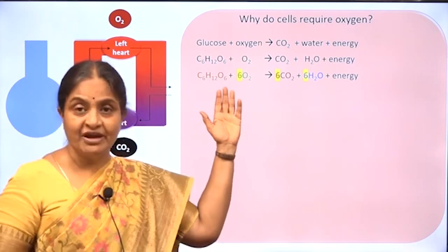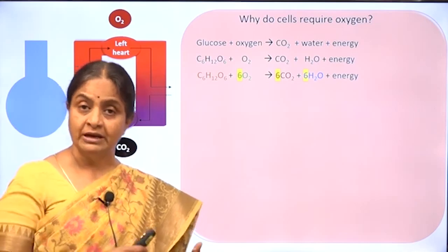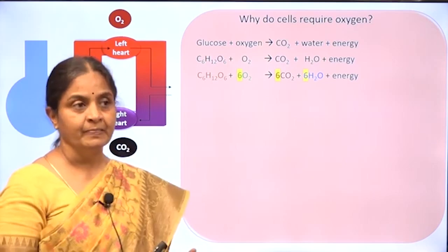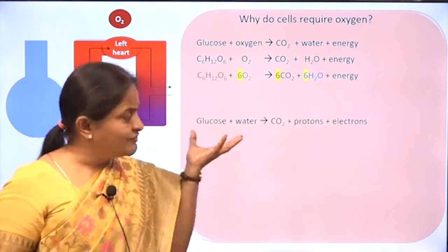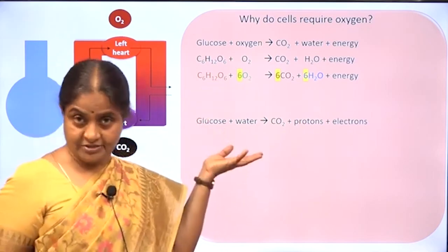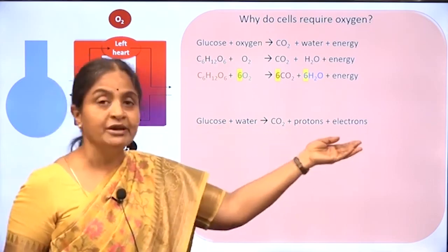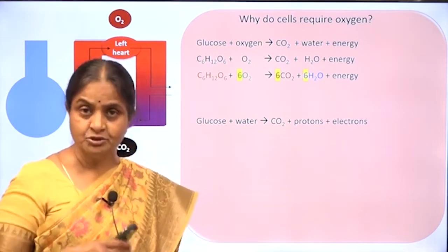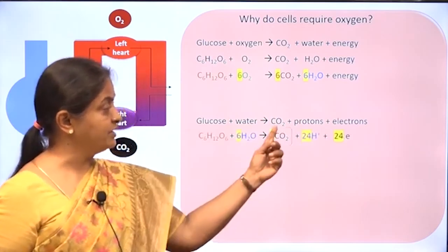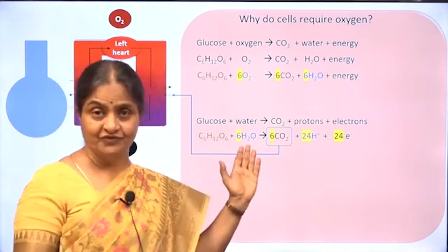This is too simplified a form of all the complex reactions that happen in the process, which include glycolysis as well as the tricarboxylic acid cycle, or Krebs cycle. A slightly better representation would be to say that glucose splits to form carbon dioxide, protons, and electrons through a series of reactions in which there is water uptake. This is the carbon dioxide that has to be given off, and it does not require oxygen for its formation.